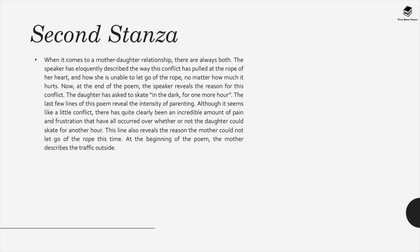The speaker eloquently describes how this conflict has pulled at the rope of her heart and how she is unable to let go, no matter how much it hurts. At the end of the poem, the speaker reveals the reason for this conflict: the daughter has asked to skate 'in the dark for one more hour.' The last few lines reveal the intensity of parenting — what seems a small conflict has caused an incredible amount of pain and frustration.